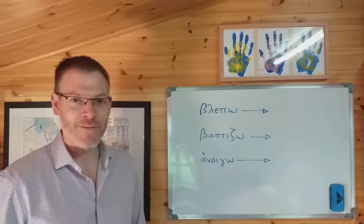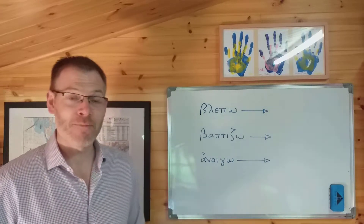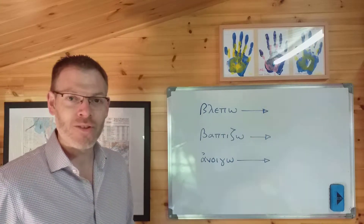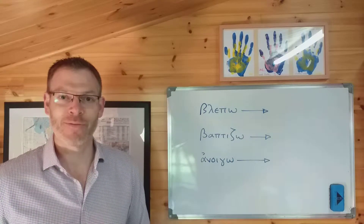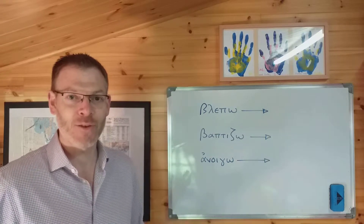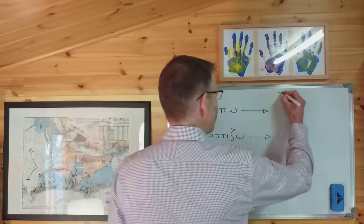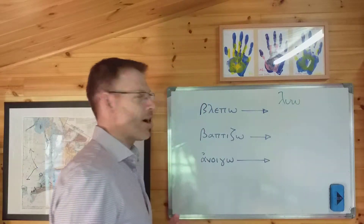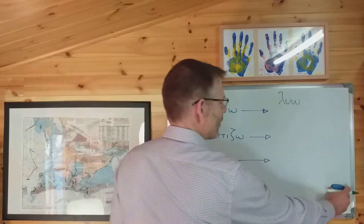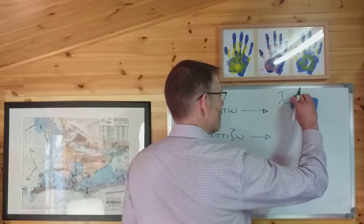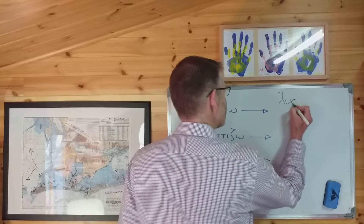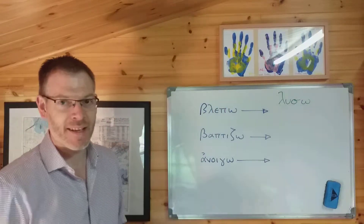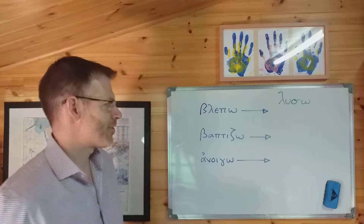So let's just take a look at these verbs, and let's remind ourselves what happens generally speaking if you want to add a sigma suffix to a verb — for example to make a future tense. Let's take a verb like luo. If you want to make it future, we add a sigma suffix to the stem and then pop the ending on. Same ending: luso. All very simple and straightforward.